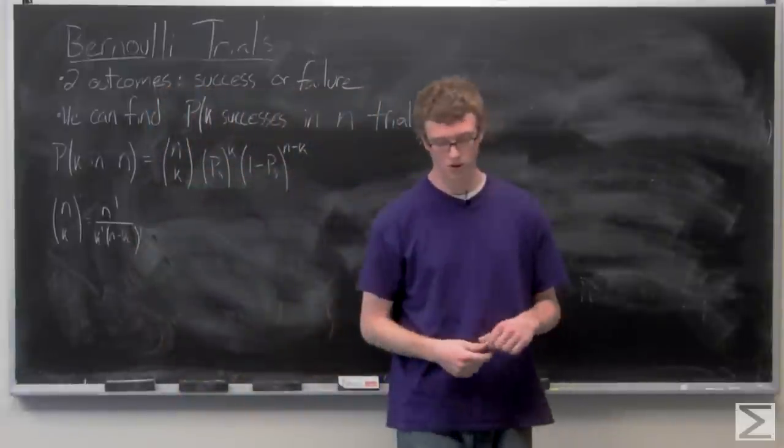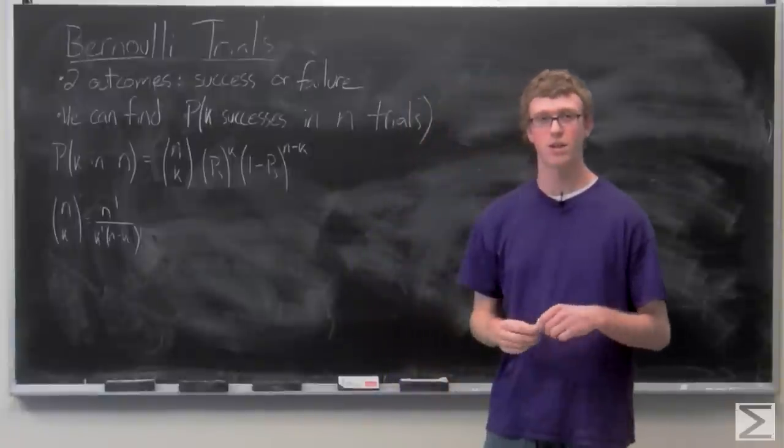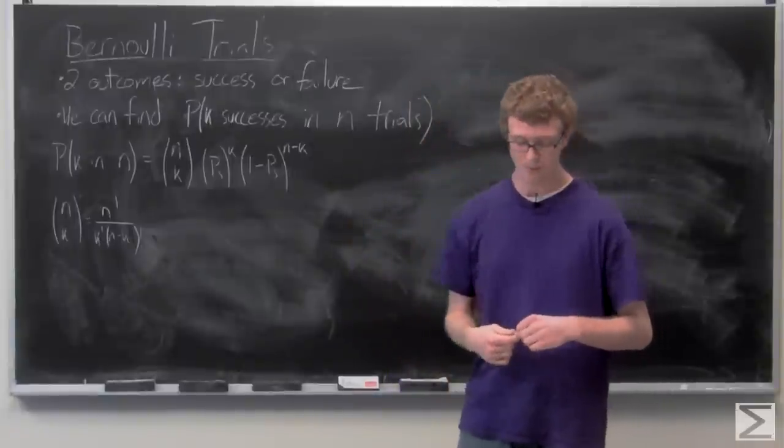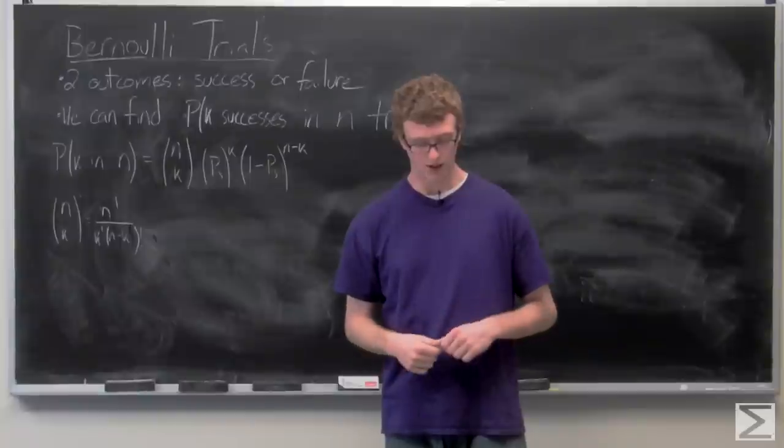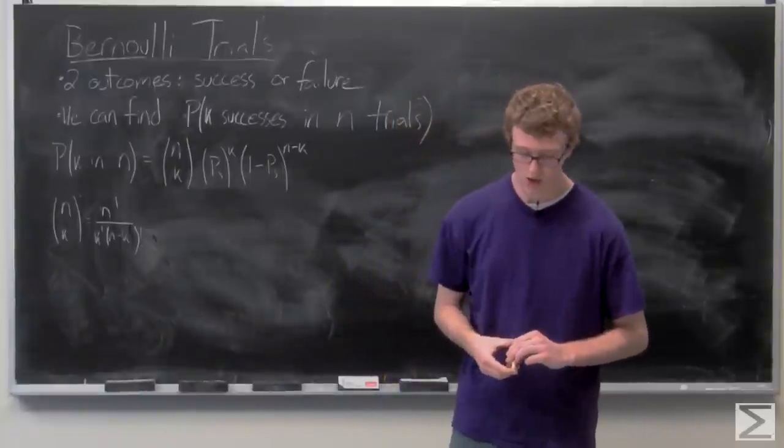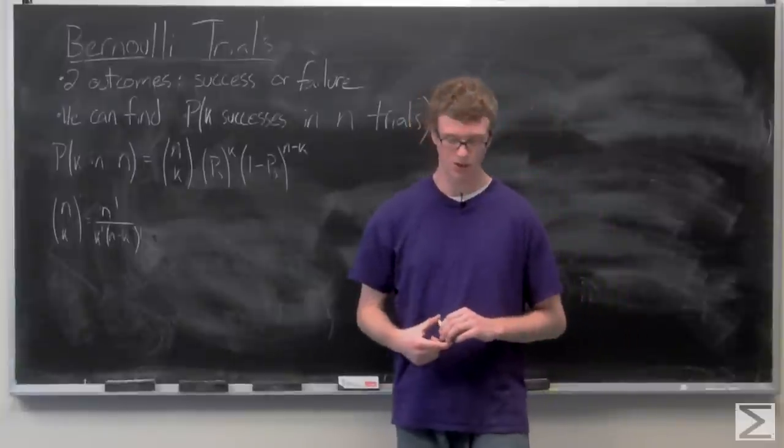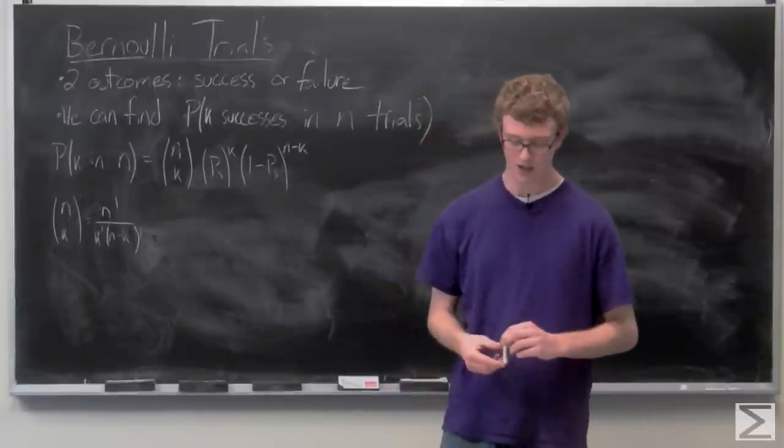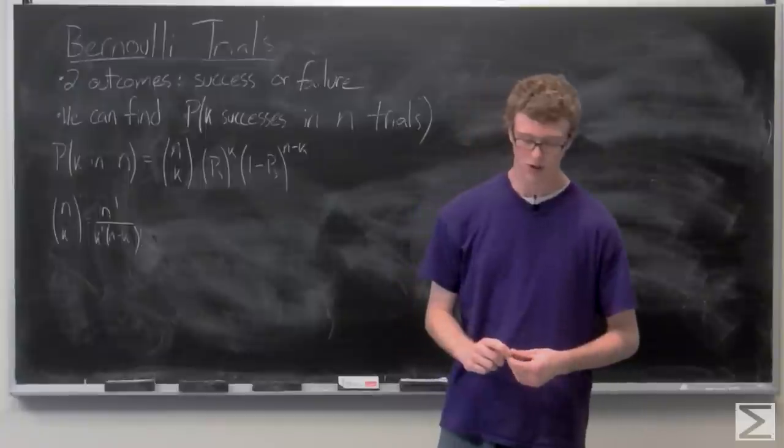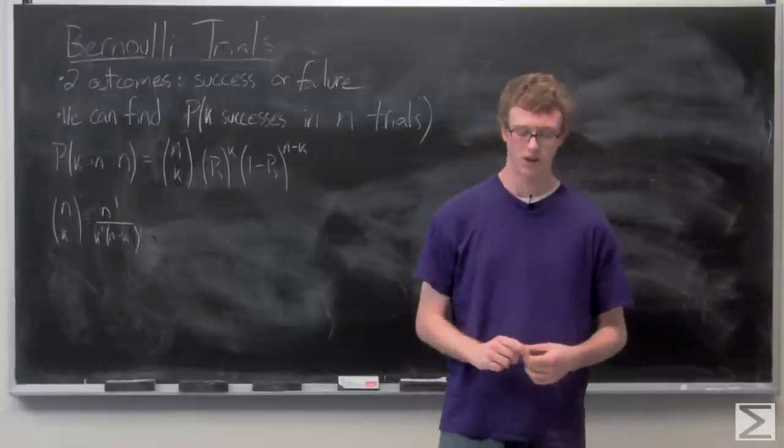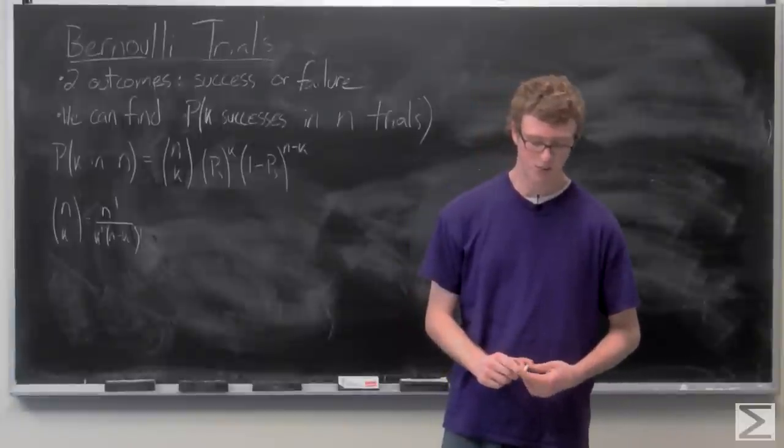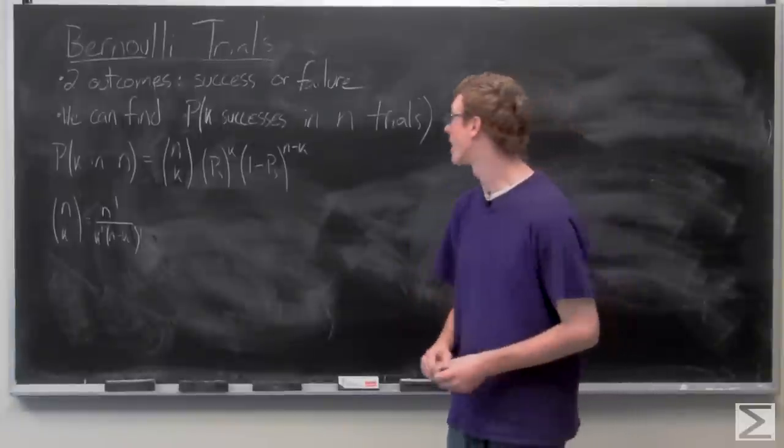So we're going to go ahead and just take a look at some examples of using this binomial probability distribution. We're given that a teacher gives a test with 20 multiple choice questions with four answers for each question. And each question has a one-fourth chance of getting it right. And we're assuming that the student is guessing and all the questions are independent. And we're asked to figure out the probability that a student guesses eight correct.